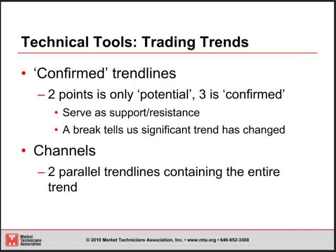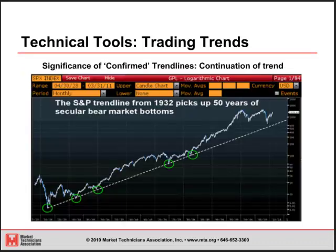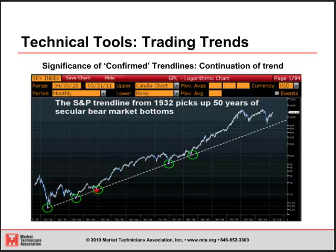We also want to take a look at channels, which are effectively two parallel trend lines containing the entire move. Here we're looking at a period across the S&P back to the 1932 lows — what some might refer to as the mother of all trend lines for the S&P, as it's contained basically 50 years of secular bear market bottoms. We had touch points in 1932, the major bottoms in 1942 and 1949, back in 1974-75, again in 1982, and came relatively close at the 2009 bottom as well. This ended up being a confirmed trend line once we got the third point in 1949, and if it does end up breaking, that becomes really quite significant.